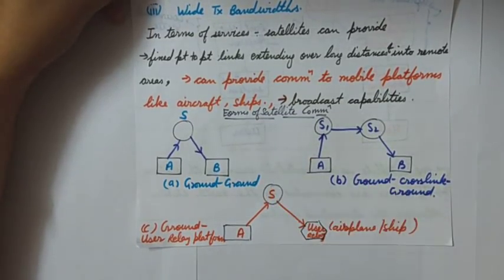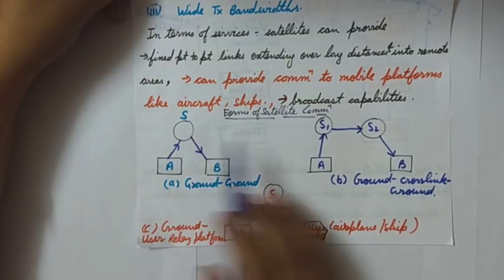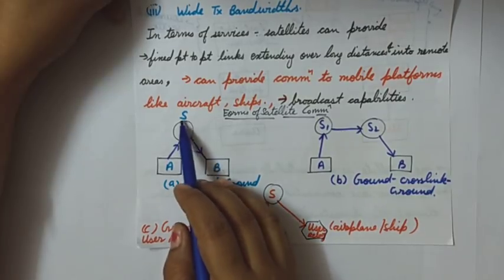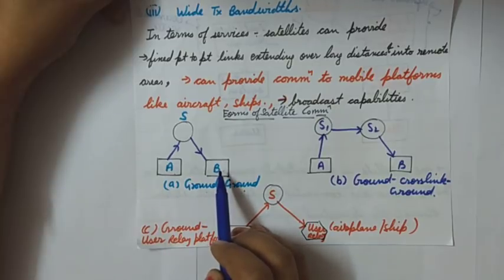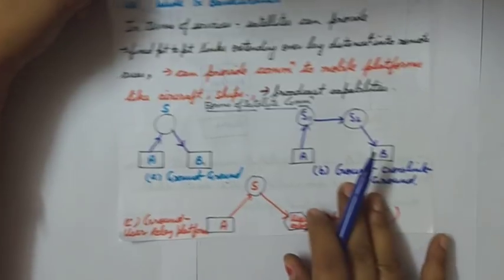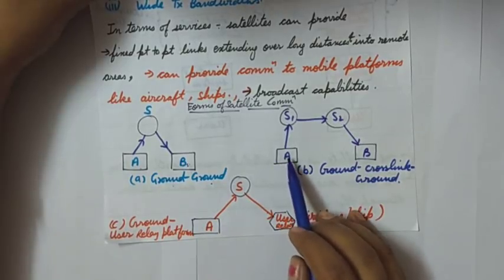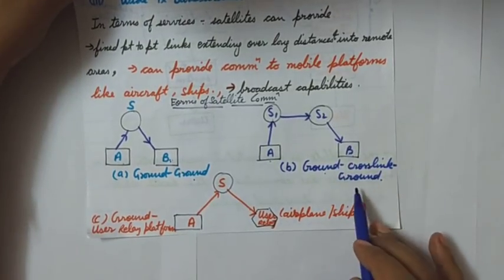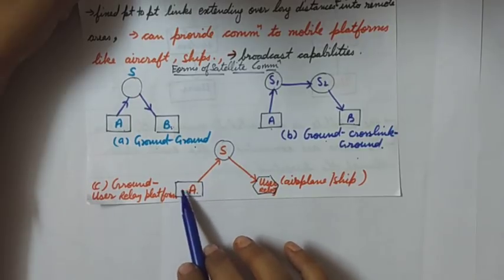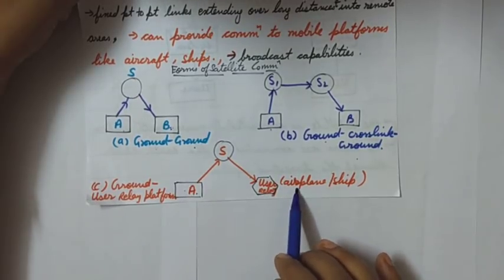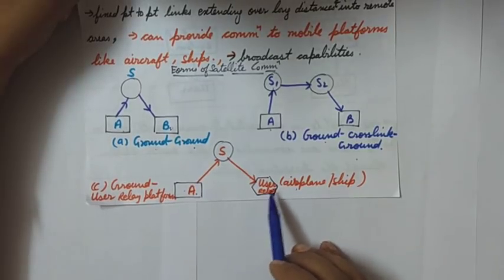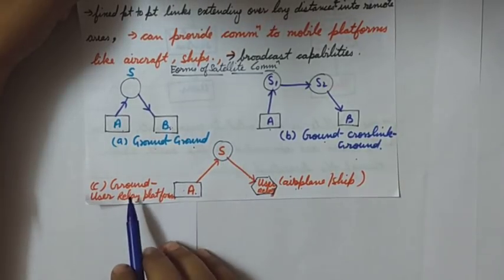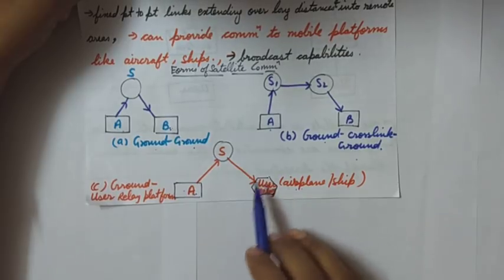I have drawn some diagrams to show the various forms of satellite communication. S represents the satellite; A and B are ground earth stations. The first form is ground-to-ground communication where A and B earth stations communicate via satellite S. The second is communication between two earth stations A and B with the help of two satellites S1 and S2 — this is called a ground crosslink. The third form shows an earth station A communicating with an airplane or ship user via satellite S — a ground and user relay platform communication.